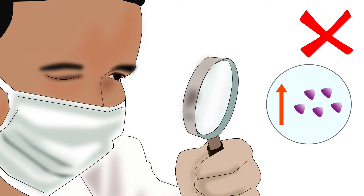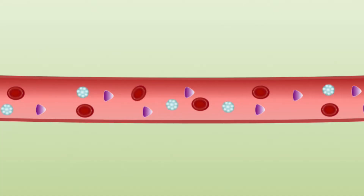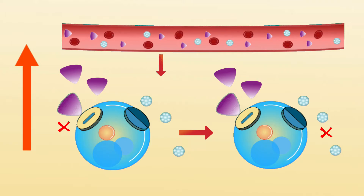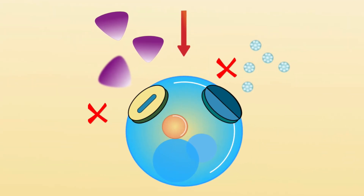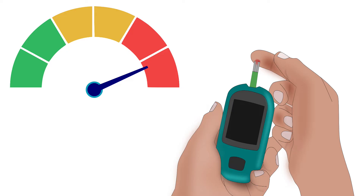If insulin level is not checked in the blood, this phase may be missed, as blood sugar levels would still be normal. After many years, insulin resistance becomes severe. Even the increased levels of insulin are not able to do their work — not able to push enough glucose into the cells. That is when the blood sugar levels rise and type 2 diabetes gets detected.